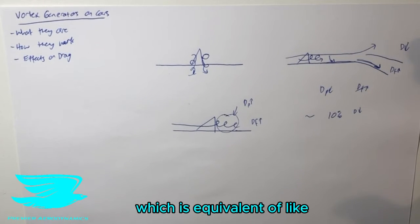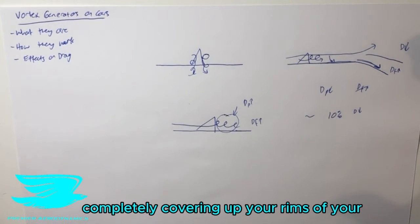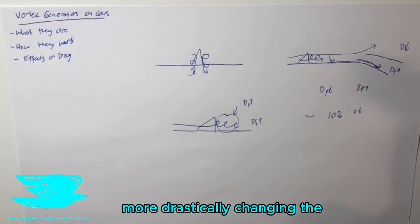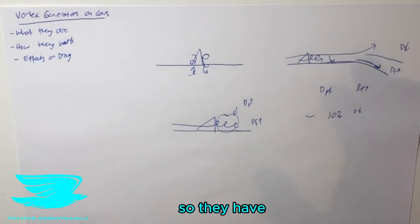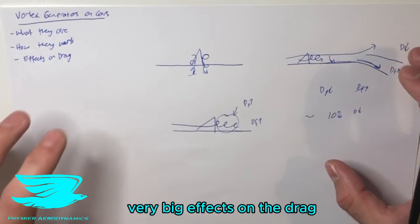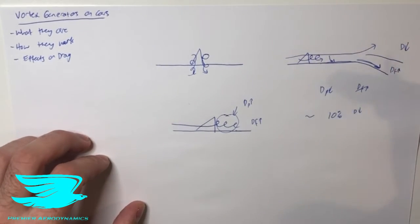That's like 25 counts, which is the equivalent of completely covering up your rims of your car, or even more drastically changing the diffuser. So they do have very big effects on the drag, which are very beneficial, but depending on the situation.